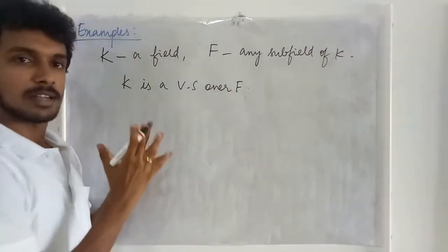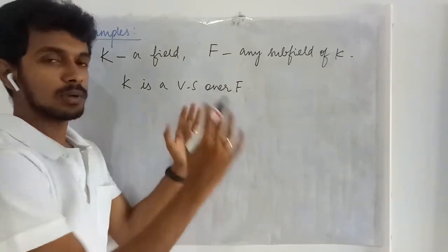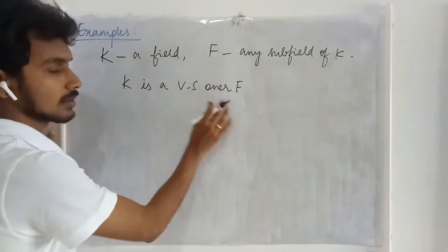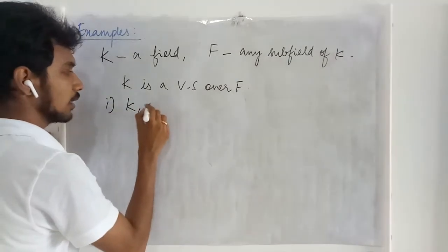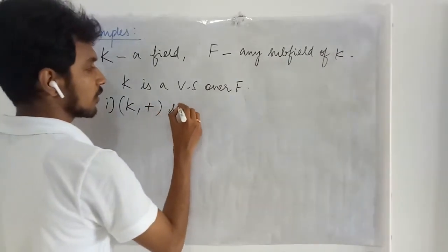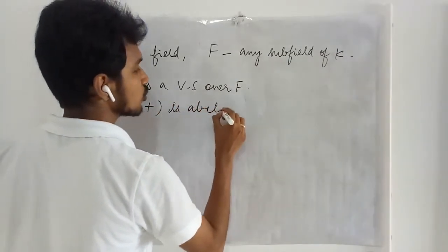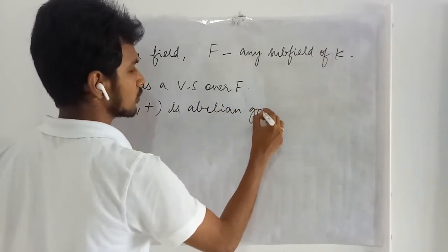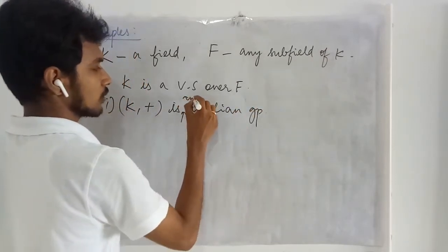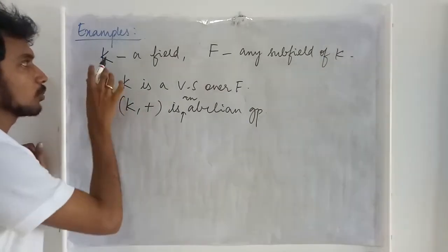Now let me give the outline of saying this is a vector space. First thing it has to satisfy the conditions to be an abelian group. Yes. Of course it is an abelian group.